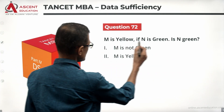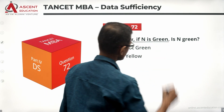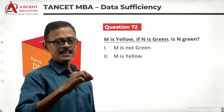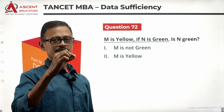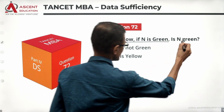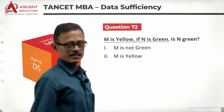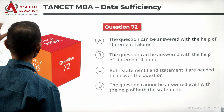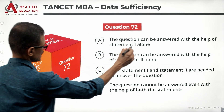The question stem states: M is yellow if N is green. So if N is green, then M will be yellow. The question being asked is: Is N green? Take a look at the answer options.